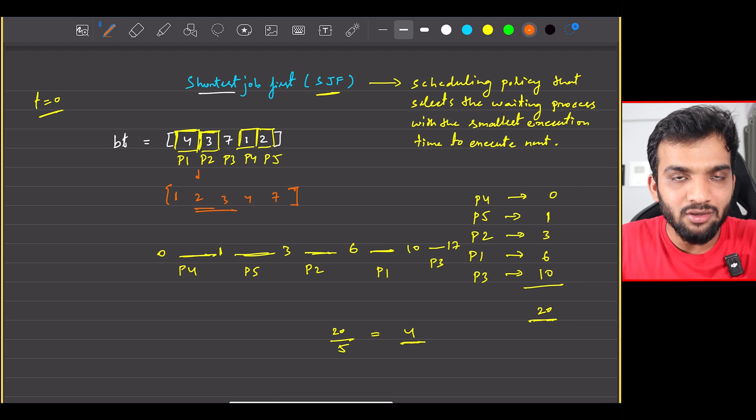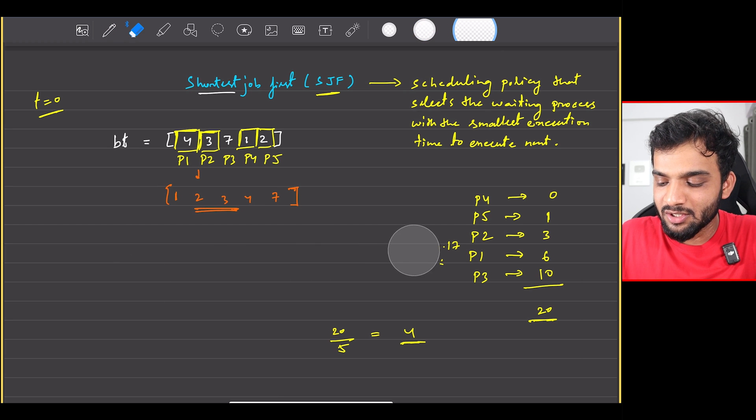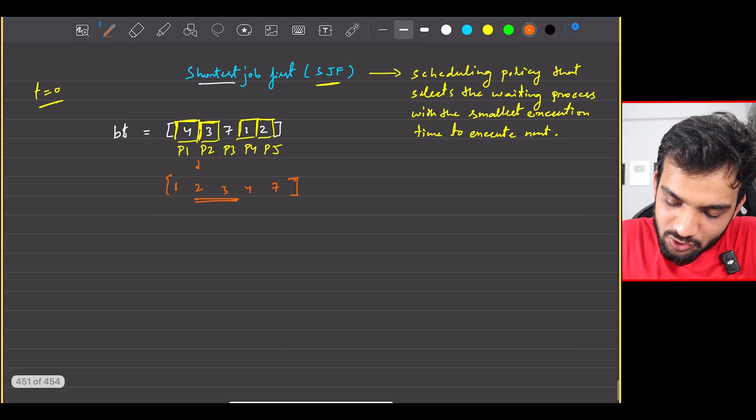And then you can take a timer and you can do the computations. So what I'll do is the first step is sorting it. Greedy, because that's what the algorithm is stating: smallest execution first time.